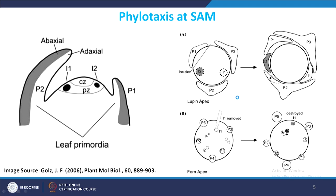To prove this communication, if you create an incision between the growing primordium and the meristem — physically disturbing or removing one of the developing primordia — the patterning or phyllotaxis is disturbed. For example, making an incision between P1 and the centre of the meristem shows that the positioning of I2 is changed and shifted from its original position. Similarly, if you kill one of the primordia, there is a migration or change in the position of other primordia. This tells us that communication between meristem and primordia is absolutely important for positioning primordia in the growing meristem.